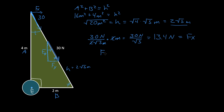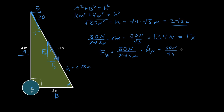Now let's find the force in the y direction. It's 30 Newtons over 2√5 meters, times 4 meters. The meters cancel, and we can simplify — the 2 breaks down to give us 60 over 2√5, which is simply twice as much as Fx. That gives us 26.8 Newtons. So now we know the force in the y direction is 26.8 Newtons and the force in the x direction is 13.4 Newtons.